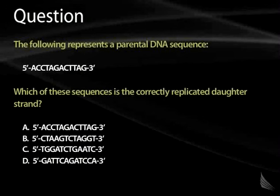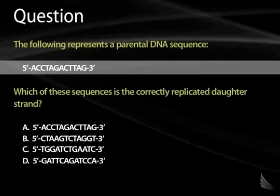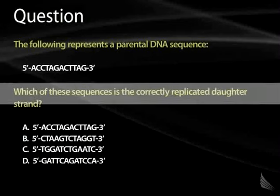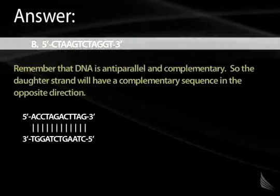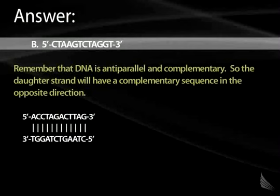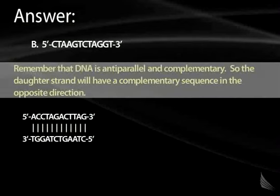Here is a practice question to test your understanding of DNA replication. A parental DNA sequence is given from 5' to 3': ACCTAGACTTAG. Which of the listed sequences (A through D) is the correctly replicated daughter strand? The correct answer is B: CTAAGAGTTAGGT. The important concept is to remember that DNA is always anti-parallel and complementary, so the daughter strand will always have the complementary sequence in the opposite direction.